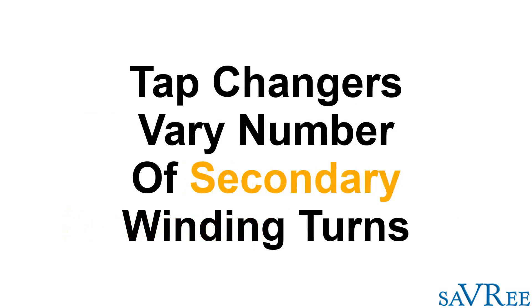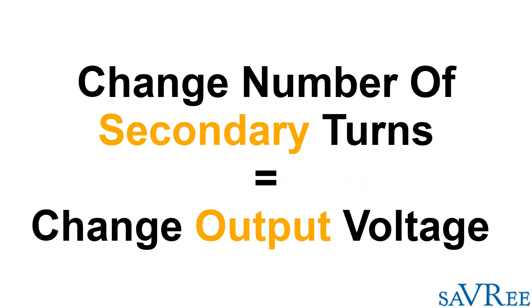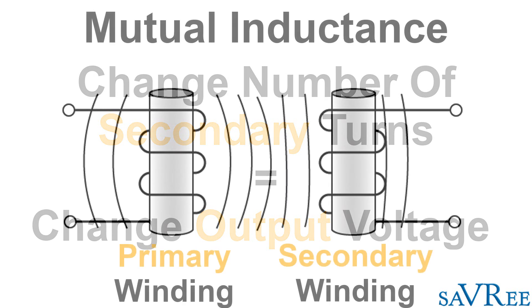Now this is quite important because if we can vary the number of turns on the windings, we can also vary the output voltage. I've got to specify here that the windings that we are varying are the secondary windings. We're varying the output voltage, so this is not for the primary winding side; this is actually for the secondary winding side. By varying the number of turns in the winding, we can vary the voltage output.